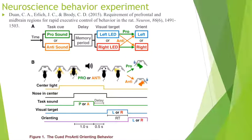For example, if the rule is anti and the visual target is on the left, then the rat should orient to the right.